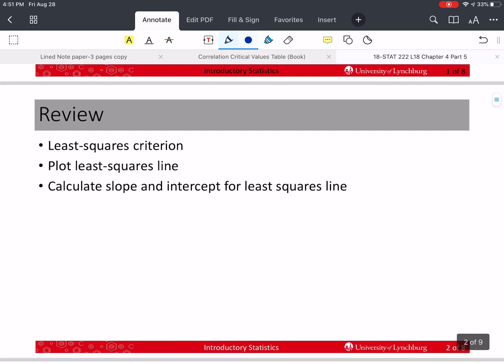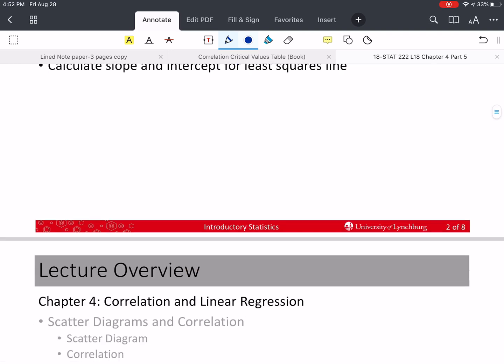We're talking about linear regression. So last time we talked about the least squares criterion, the least squares line, and we gave the equation for that. If you have the equation y hat equals a plus bx, it's easy to plot points by plugging in values of x. We talked about how to calculate the slope and the intercept for the least squares line.